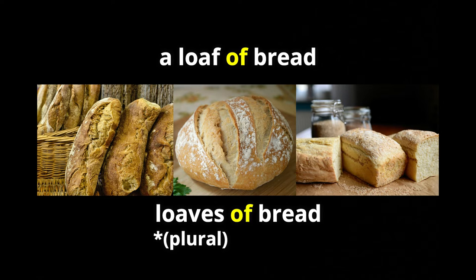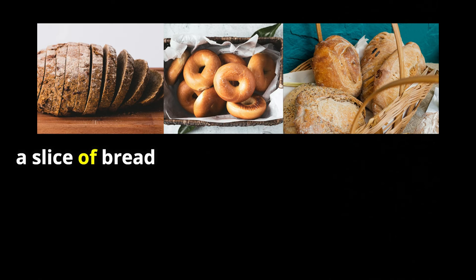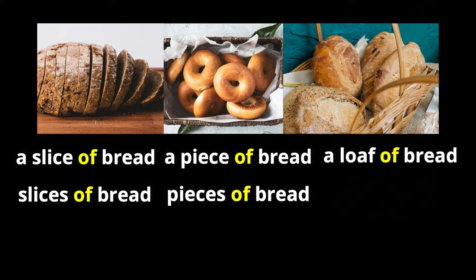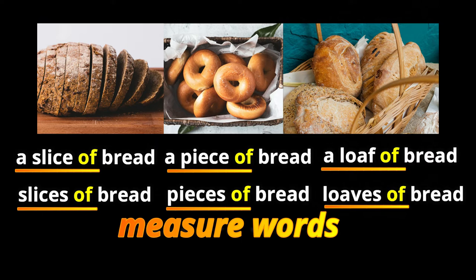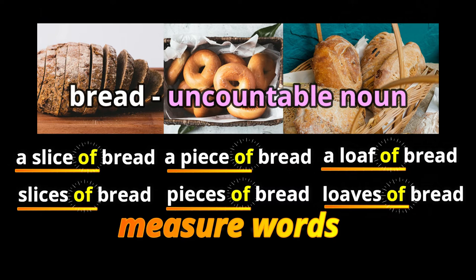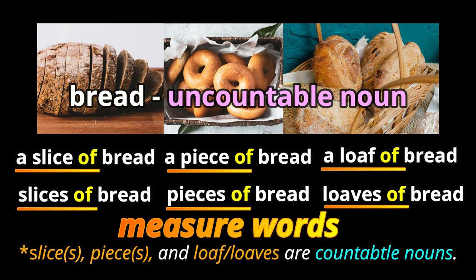Just remember that structure. Pretty much all of these uncountable nouns, when we use measure words, they use 'of' and then the uncountable noun, whatever it happens to be. Whether it's a slice, a piece, or a loaf, it's always 'of the uncountable noun.' Let's look at some more.